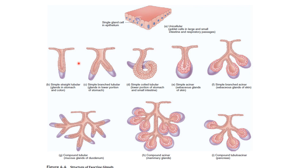Glands are called simple if their ducts are not very branched, and compound if they have many branches. If the internal structure is tube-like, they are tubular; if grape-like or sac-like, they are acinar. Types include simple straight tubular, simple branched tubular, simple coiled tubular, simple acinar, simple branched acinar, compound tubular, compound acinar, and compound tubuloacinar — having both tube and acinar characteristics.